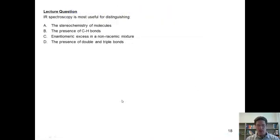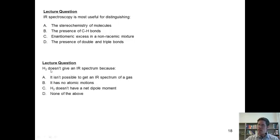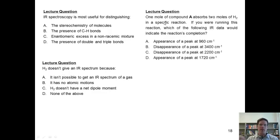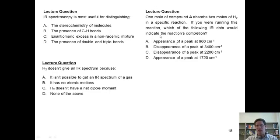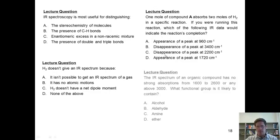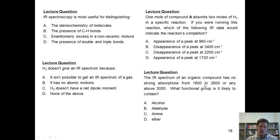Here are our IR standardized exam-like questions. First: IR spectroscopy is most useful for distinguishing what? Next: H2 doesn't give an IR spectrum — why? Next: one mole of compound A absorbs two moles of H2 in a specific reaction. What reaction could that be? If you are running this reaction, which of the following IR data would indicate the reaction's completion? And: the IR spectrum of an organic compound has no strong absorptions from 1600 to 2600 or any above 3000 — what functional group is it likely to contain?